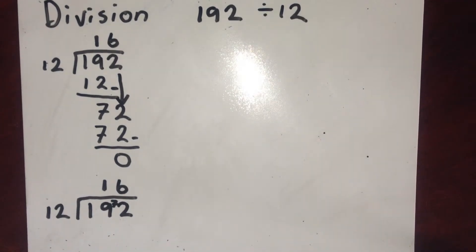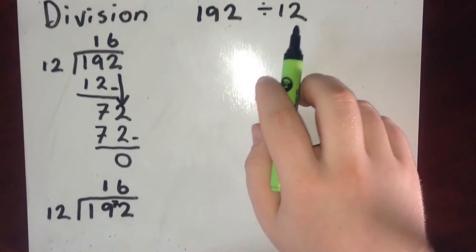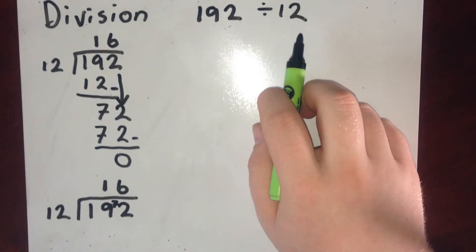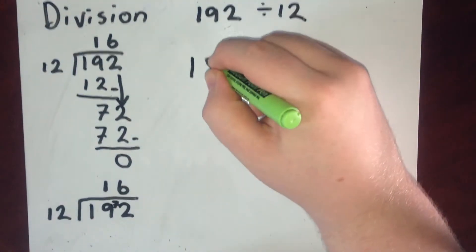Using another method, I'm going to use one that's called chunking. Chunking involves taking away large amounts that you already know how many 12s are in. I'm starting with 192.